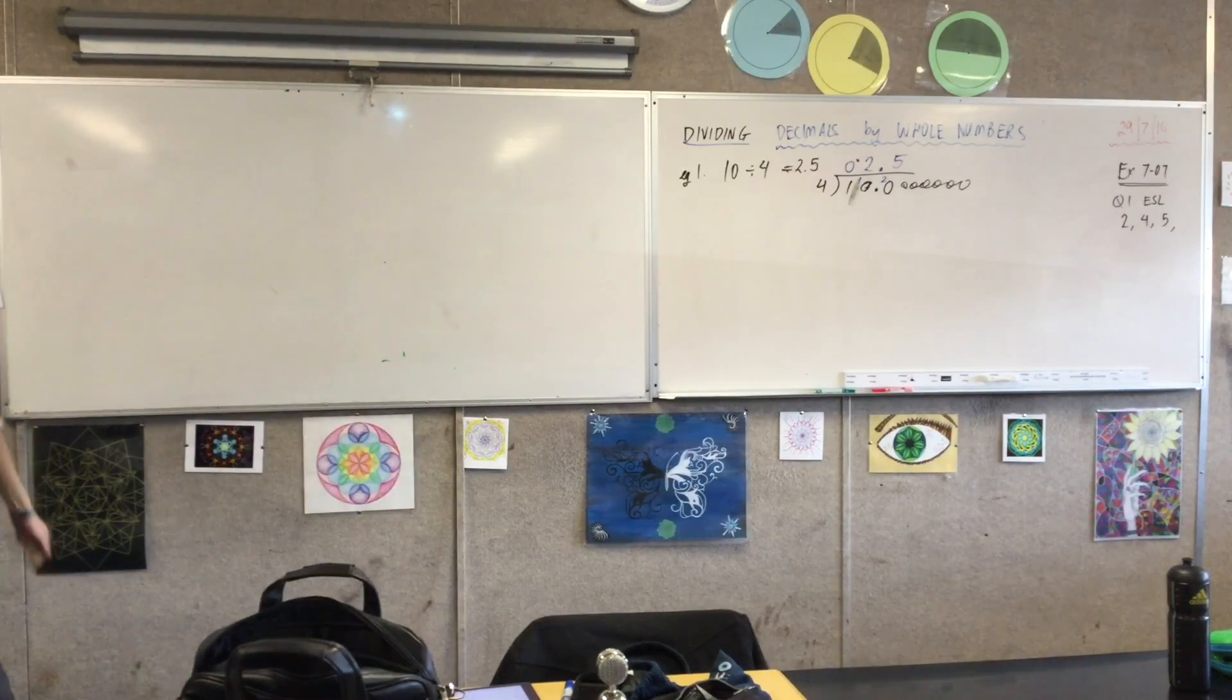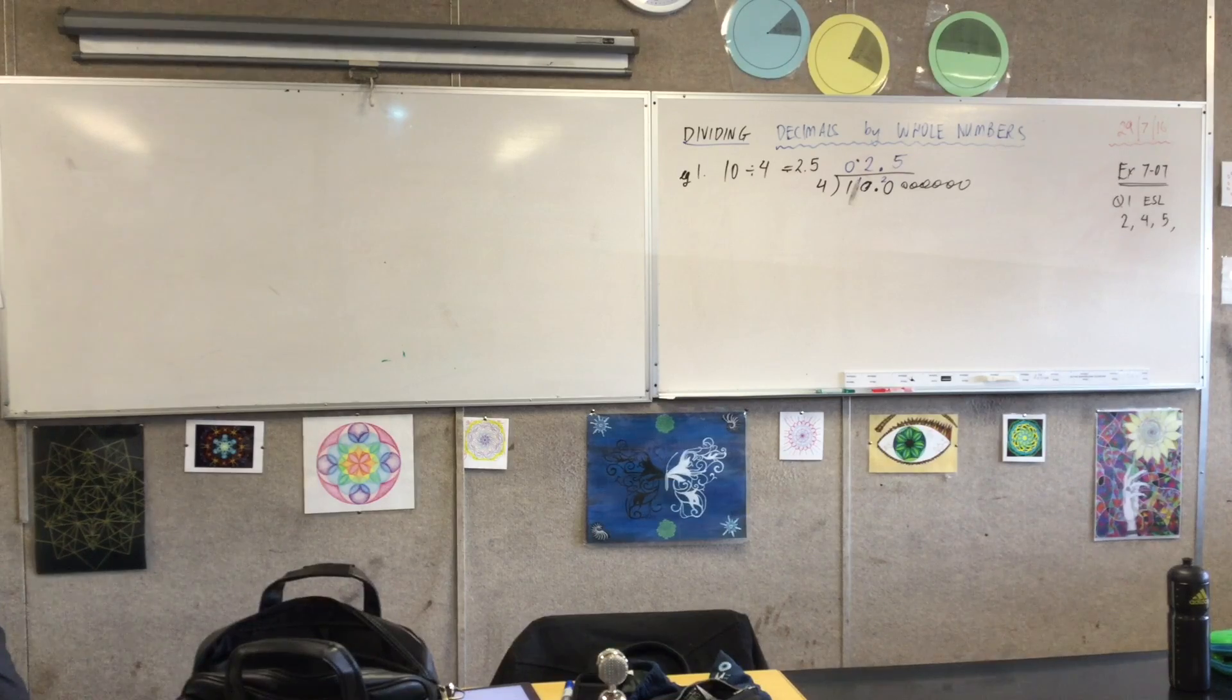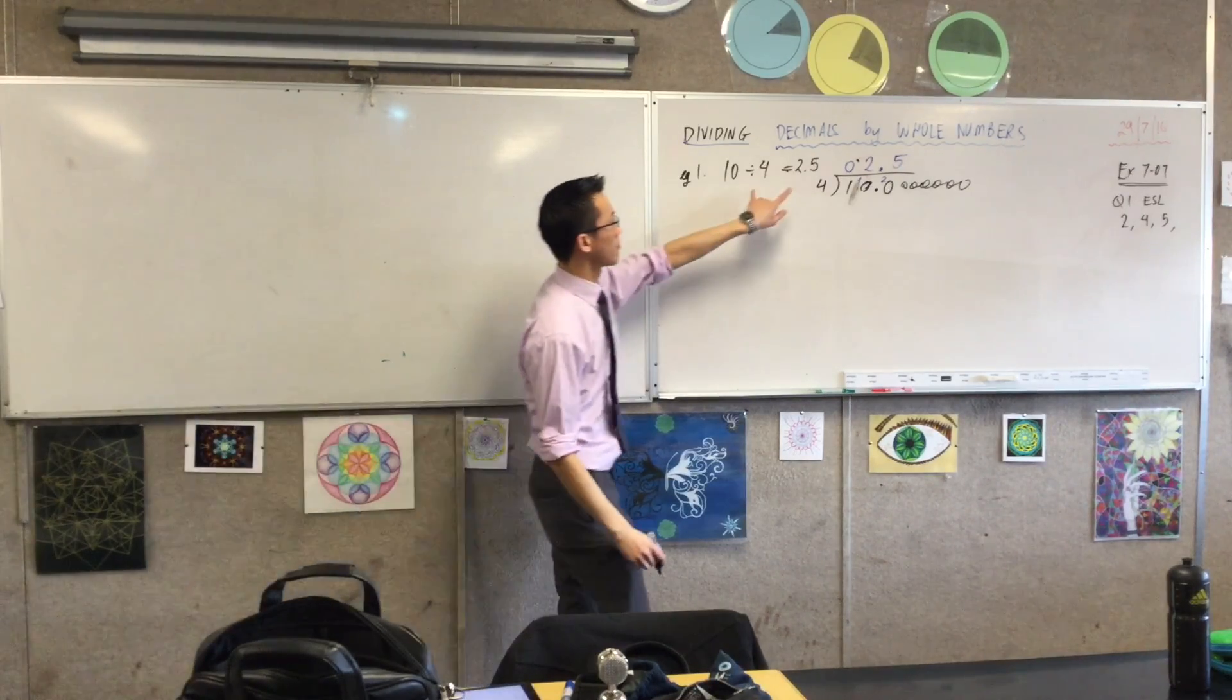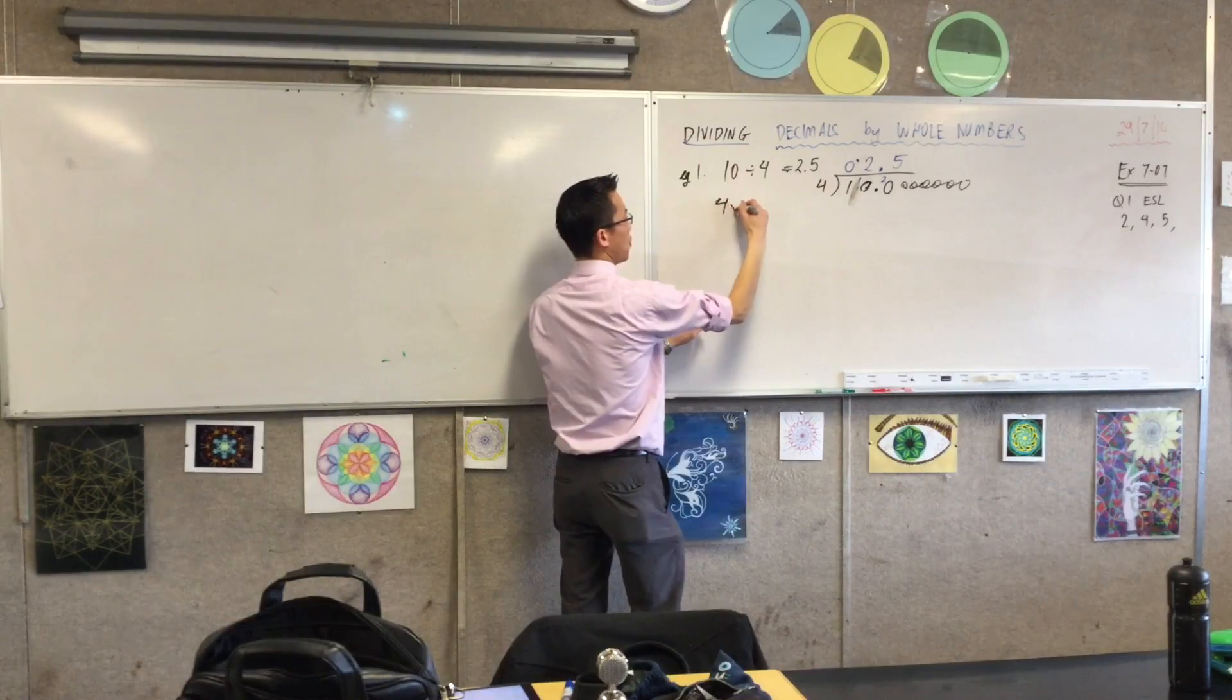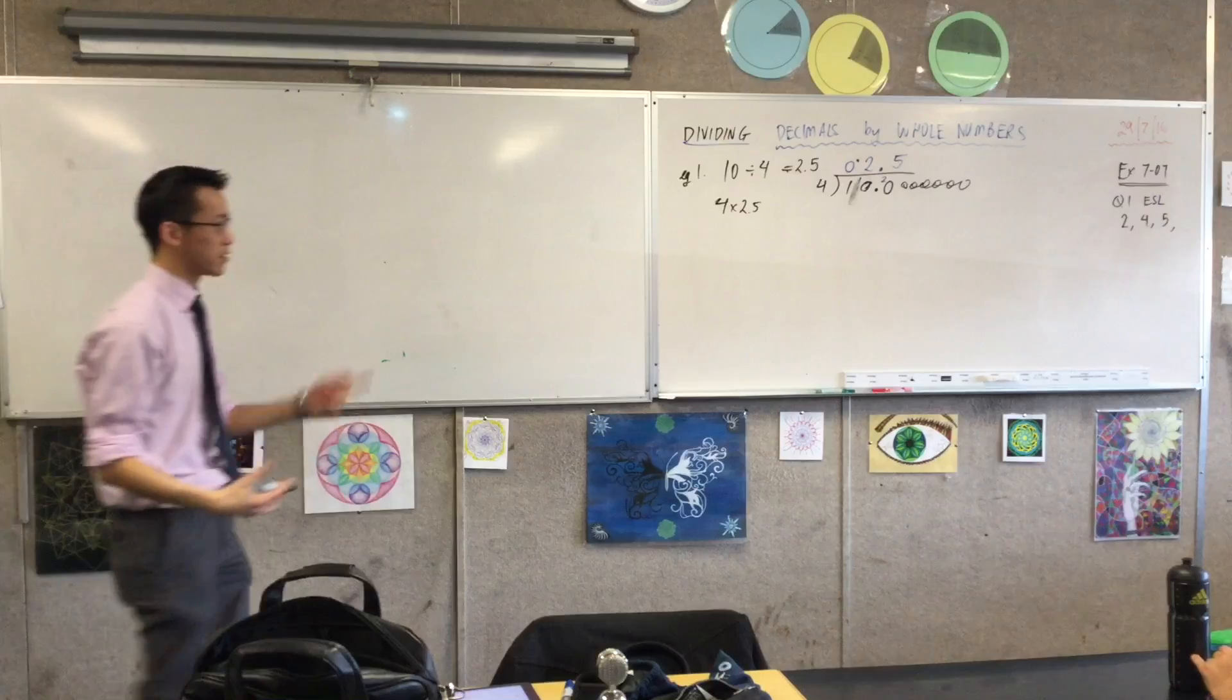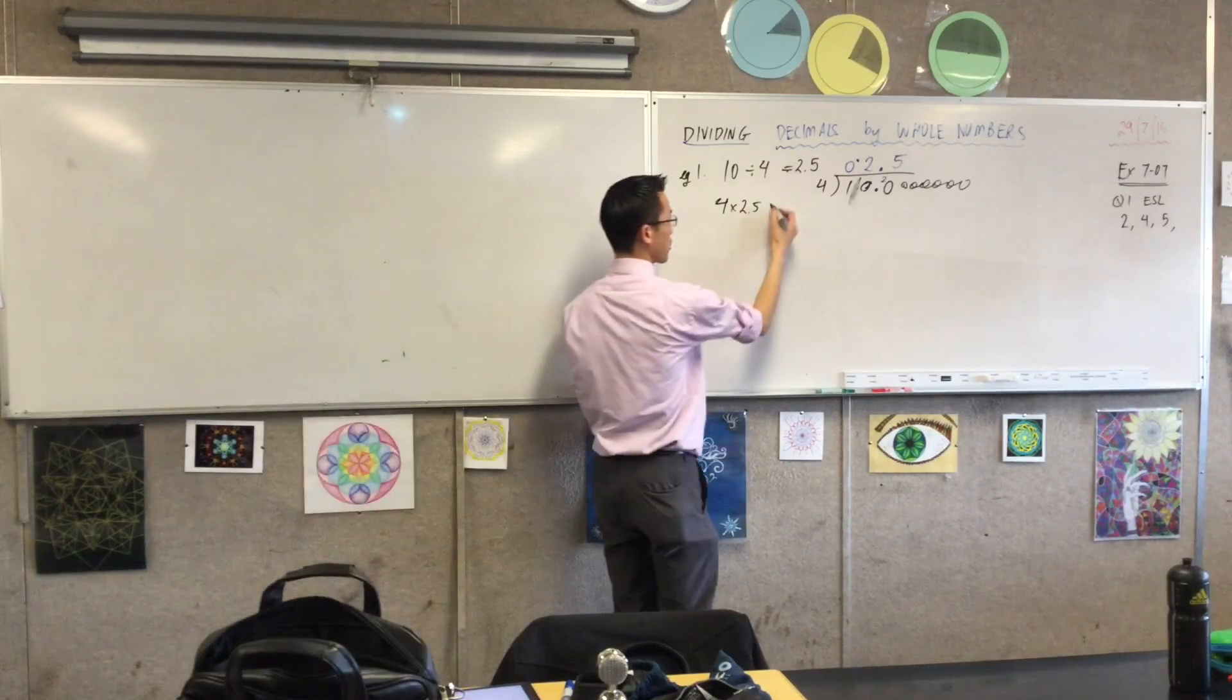Now, as is true in so many parts of mathematics, if you get an answer, you should be able to check whether it's true. How could I do that? Yeah? Times 4 by 2.5. 4 times 2.5. Now, we've done multiplication with decimals for quite a while now. Does it work out? Does it work out? It does, right?